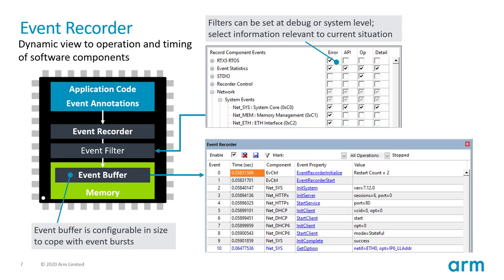The event recorder works similarly but differently. Your application includes a software component called the event recorder that records events. You can filter them using an event filter that discards events you don't care about. Events end up in an in-memory event buffer, and the debugger reads this buffer and displays events in the debug tools. The event buffer is configurable in size to cope with event bursts.